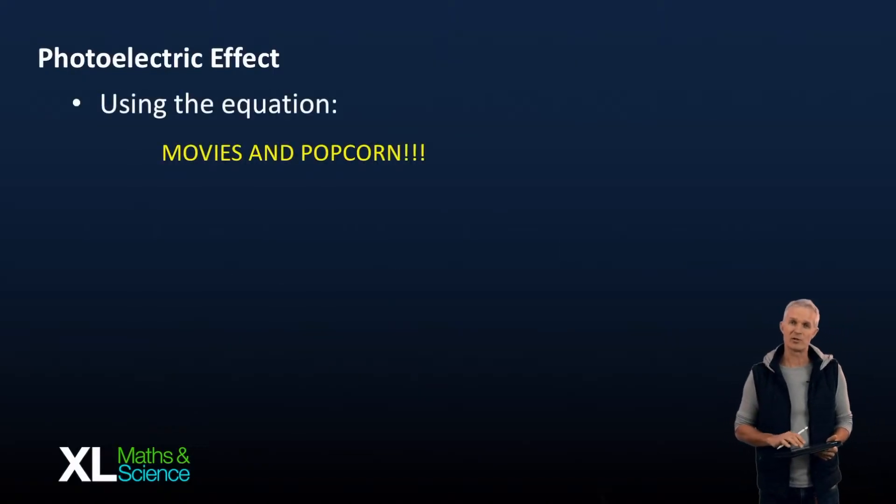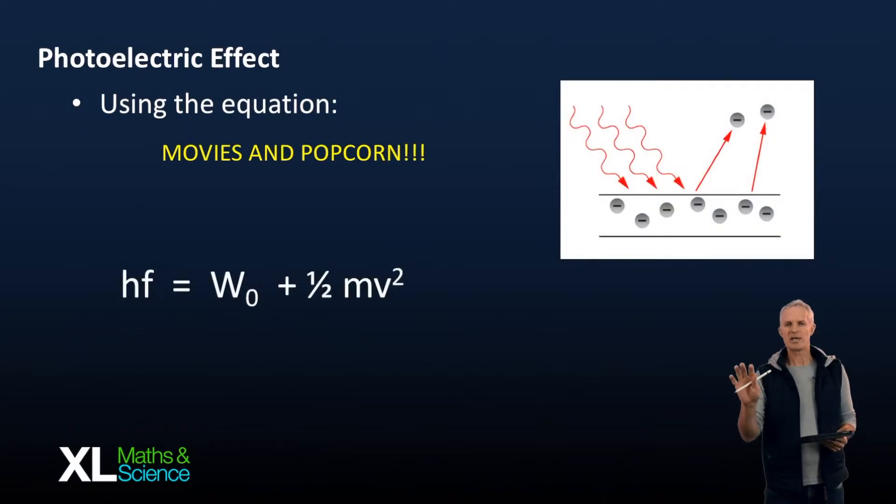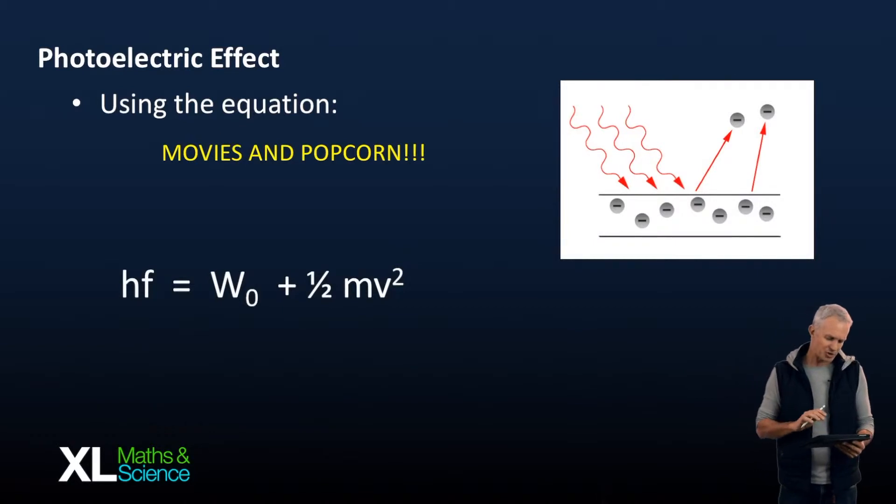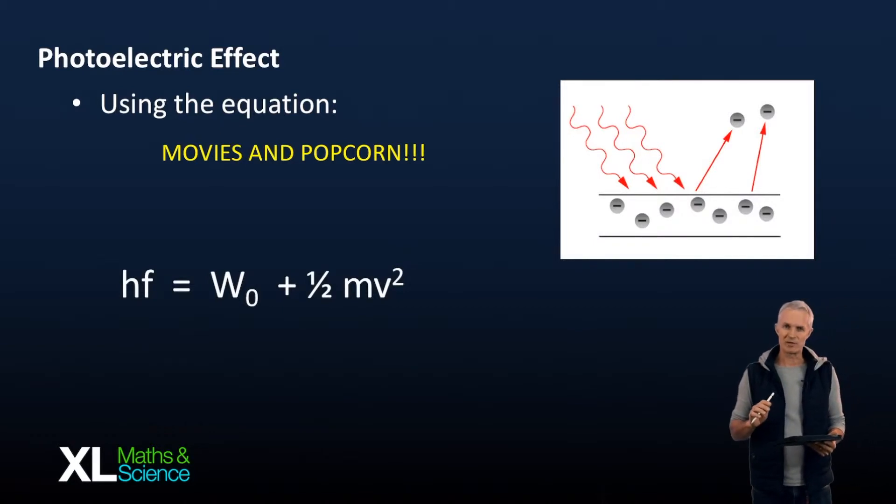There's going to be three parts to the equation. If you look on your formula sheet, it's like E equals W₀ plus EK, or if you break it down a bit, we get what we've got here: hf equals W₀ plus half mv squared.